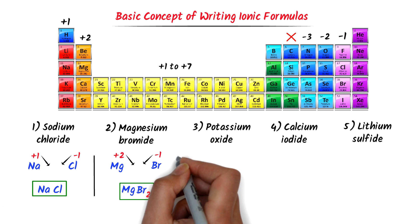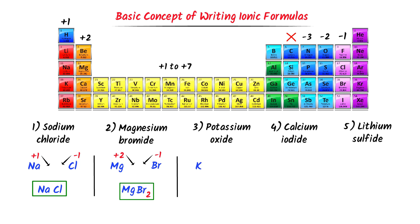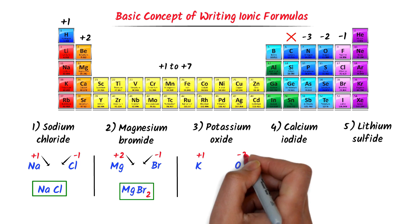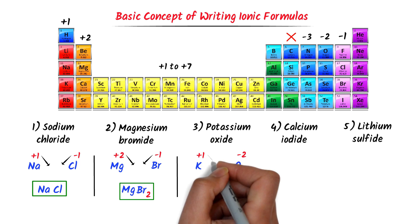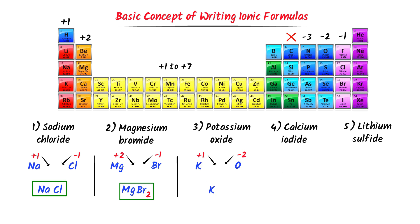Thirdly, potassium is present in group 1 and its oxidation state is positive 1. Oxide means oxygen, and oxygen is present in group 6 elements, so its oxidation state is negative 2. I cross their respective charges and I get potassium oxide. The chemical formula of potassium oxide is K₂O.